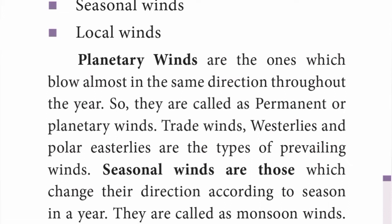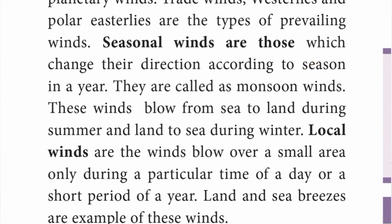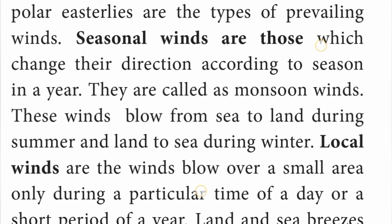Planetary winds are those which blow almost in the same direction throughout the year, which is why they are called permanent or planetary winds. Trade winds, westerlies, and polar easterlies are the types of planetary winds. Seasonal winds are those which change their direction according to the season in a year.